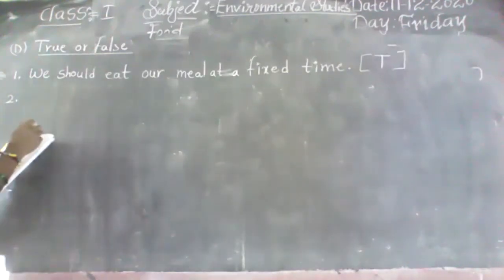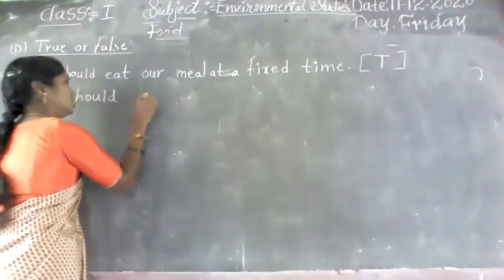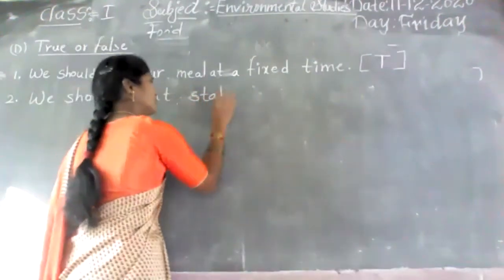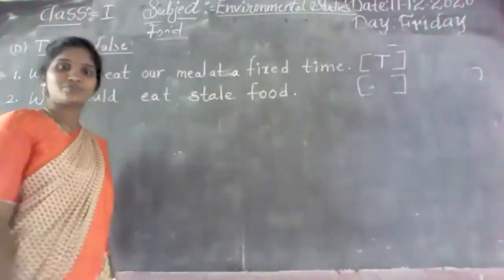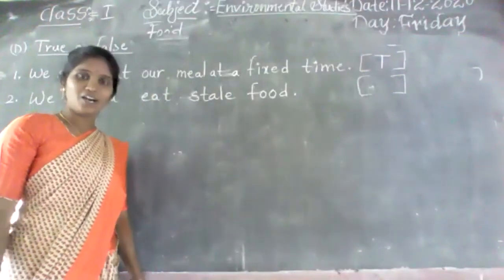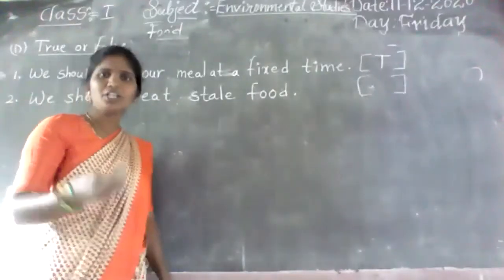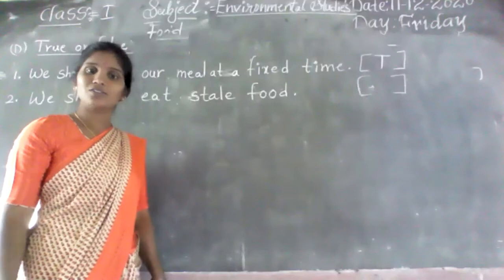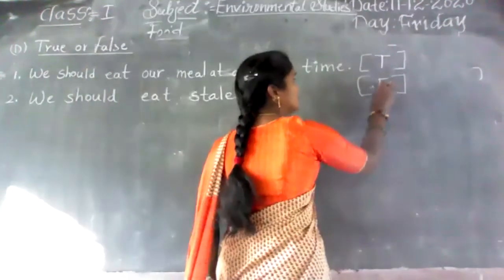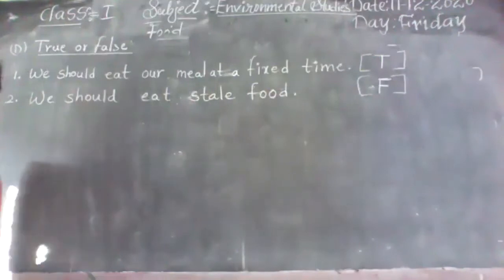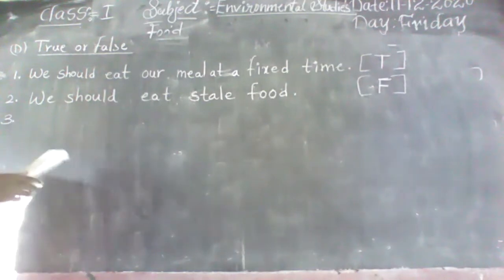Second one: we should eat stale food — it is good for health. Stale food means old, spoiled food. Shall we eat stale food? No — it is wrong. So you write capital F for false.